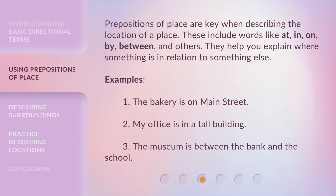Prepositions of place are key when describing the location of a place. These include words like at, in, on, by, between, and others. They help you explain where something is in relation to something else. Examples: 1. The bakery is on Main Street. 2. My office is in a tall building. 3. The museum is between the bank and the school.